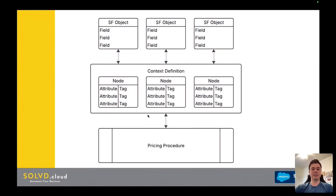The context definition gives a standard format for the attributes that a pricing procedure or your application needs to use, and it can get that from all different places and write to all different places within the system. The context definition is not specific to Revenue Cloud Advanced — it's used elsewhere and it's very powerful. I'm just touching the surface here within the context of Revenue Cloud.